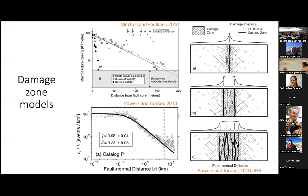So without further ado, let's get started with Ridgecrest. My work for Ridgecrest is focused on damage zones. Everyone loves damage zones. Why? Well, they are an energy sink. They modify the elastic properties of the upper crust. And over time, they garner a lot of attention from geologists, from geodesists, from geophysicists alike. And one of the challenges that comes from getting all of this attention is that we all have slightly different definitions for what a damage zone is. So before we can talk about damage zones from different data sets, we need to actually discuss how each of these subfields of geoscience defines a damage zone.